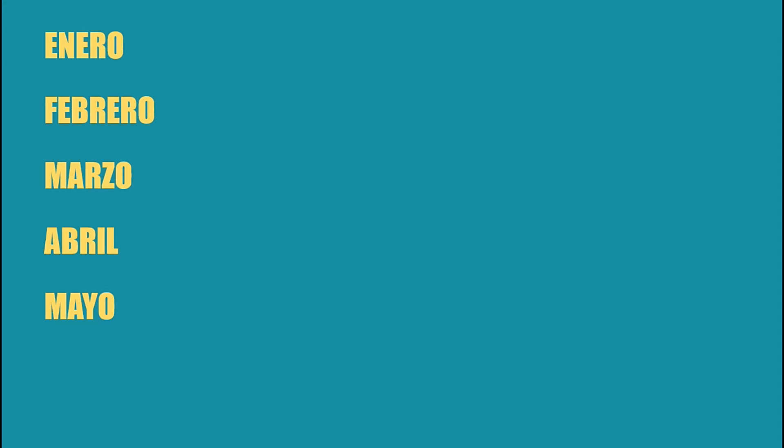For bonus content today, keeping in line with the previous video, I'm going to talk about the names of the 12 months of the year in Spanish. First you have enero for January, then febrero, then marzo, then abril, then mayo.